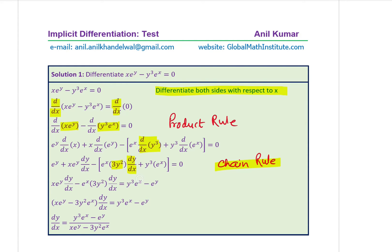Now it is a matter of solving this equation. Open the brackets, take dy/dx as common as shown in the next step, then divide by the coefficient of dy/dx to get the expression. Our answer is dy/dx equals y³·e^x minus e^y, divided by x·e^y minus 3y²·e^x.